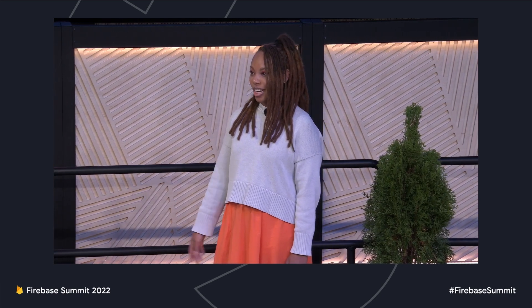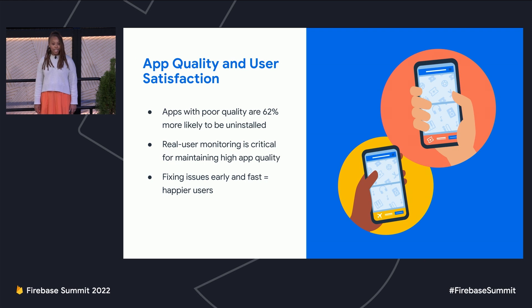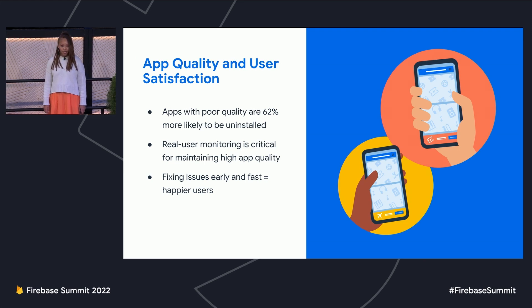Keeping your users happy is critical to your app's success, and app quality plays a major role in that happy meter. Knowing your app's stability and performance from the user's perspective is critical, especially when your users are running your app on a complex ecosystem of devices, form factors, and OS versions. The key to keeping your users happy from an app quality perspective is fixing issues early and fast.